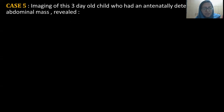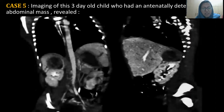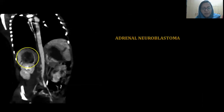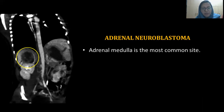Case number five: Imaging of a three-day-old child who had an antenatally detected abdominal mass revealed a well-defined rounded hyperdense lesion, scalloping the inferior surface of the liver on top of the upper pole of the right kidney. On post-contrast, the lesion showed heterogeneous enhancement. The diagnosis came as adrenal neuroblastoma, of which the adrenal medulla is the most common site.